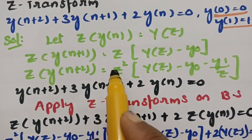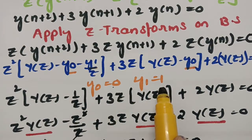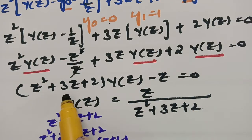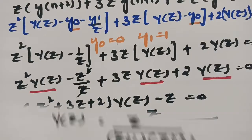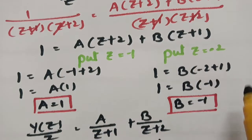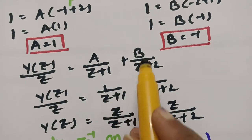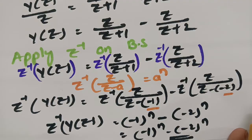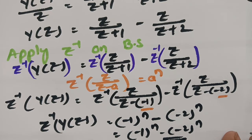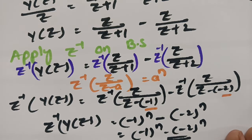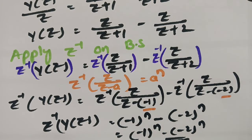To summarize: we substituted initial conditions Y(0)=0 and Y(1)=1 after applying Z-transforms, factored Z²+3Z+2, resolved into partial fractions to get A=1 and B=-1, then applied Z-inverse using the standard formula to get the final answer (-1)ⁿ - (-2)ⁿ. There are only two more videos left in this Z-transforms playlist. Please go through the playlist — it will be very helpful for your preparation. If you liked it, please pass it on to your friends and support this channel. Thank you so much for watching.